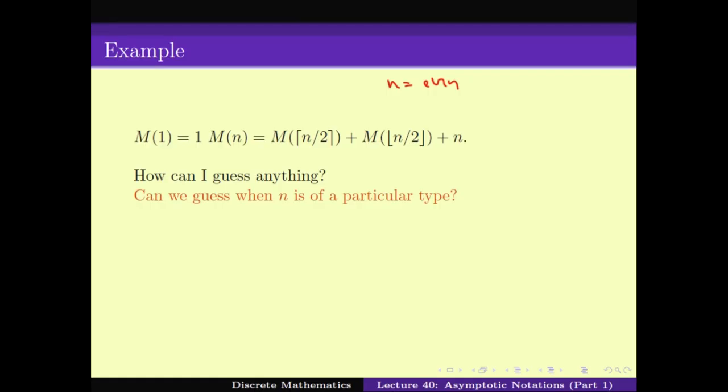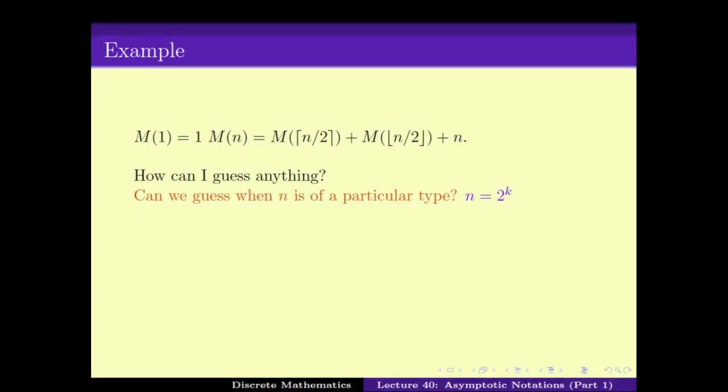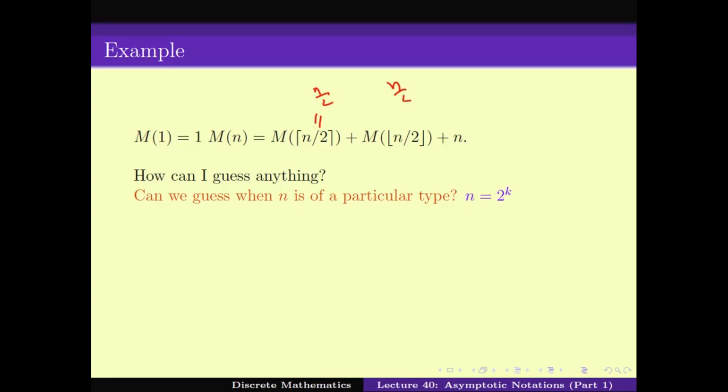So if we can guess, question is, can we guess this number M(n) when n is of a particular type? And the idea is, what happens if n = 2^k? Let's see what happens. If n = 2^k, the good thing is that both of them is just n/2. So I have M(n) = 2×M(n/2) + n, which equals 2 times... Now n/2 is also a power of 2, hence also an even number. And hence I can just again apply this one and I get 2×(2×M(n/4) + n/2) + n, which is 4×M(n/4) + 2n.